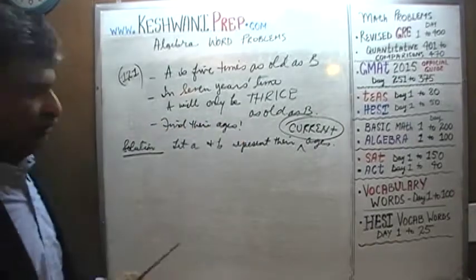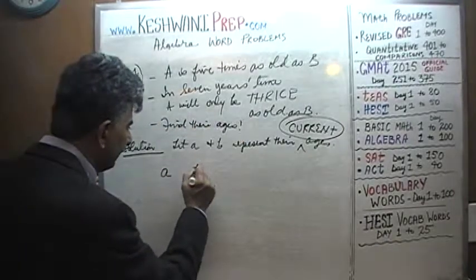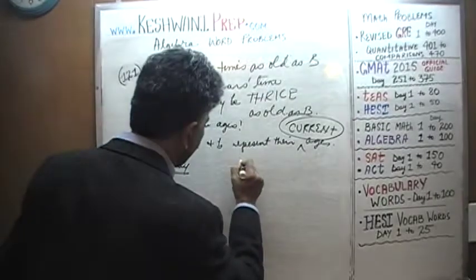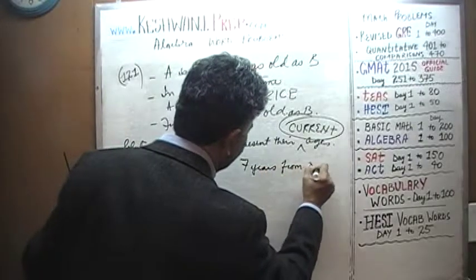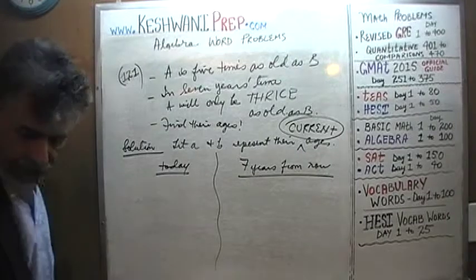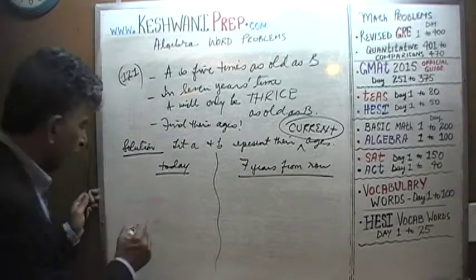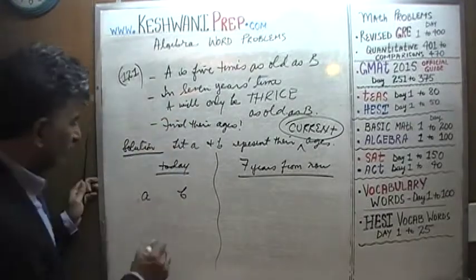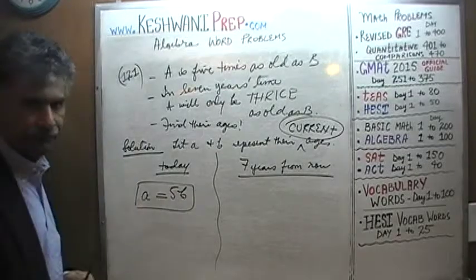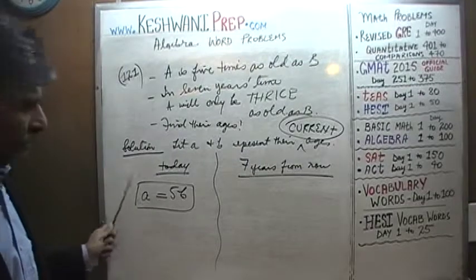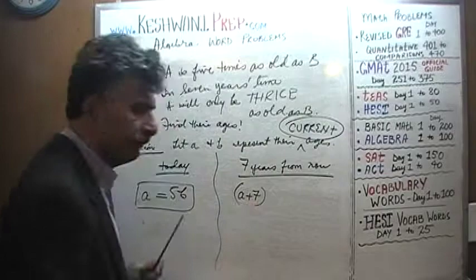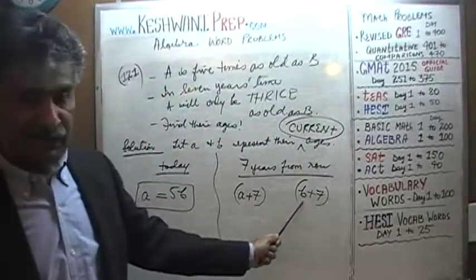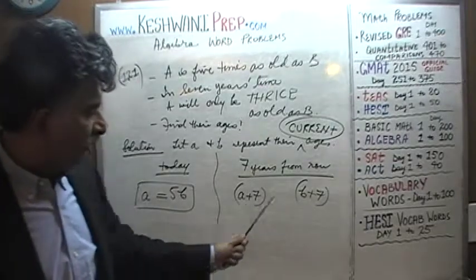Now we can continue. Today, A is five times as old as B, so A equals 5B. Seven years from now, A's age will be A plus 7 and B's age will be B plus 7 — whatever their ages are today, it's just seven more than that. We set up two time periods side by side: today and seven years from now.